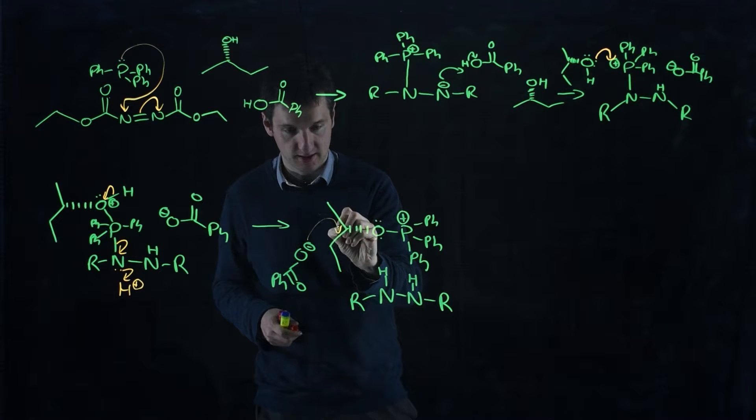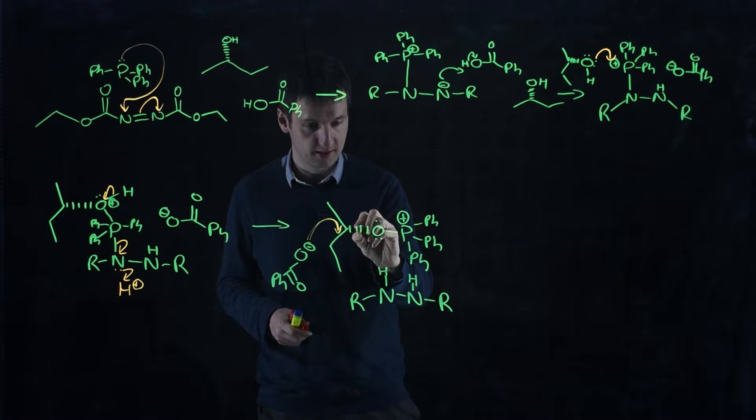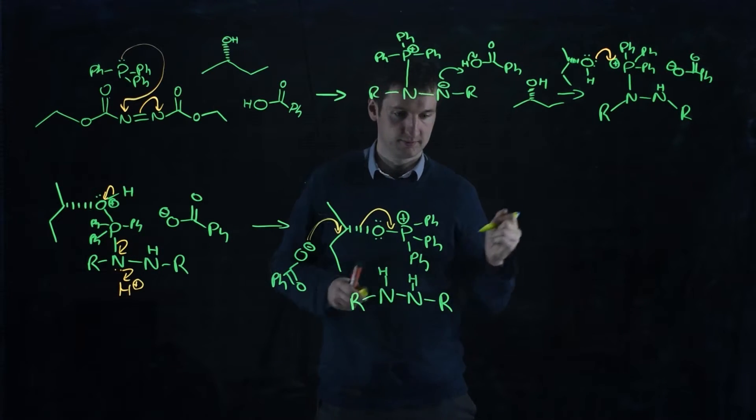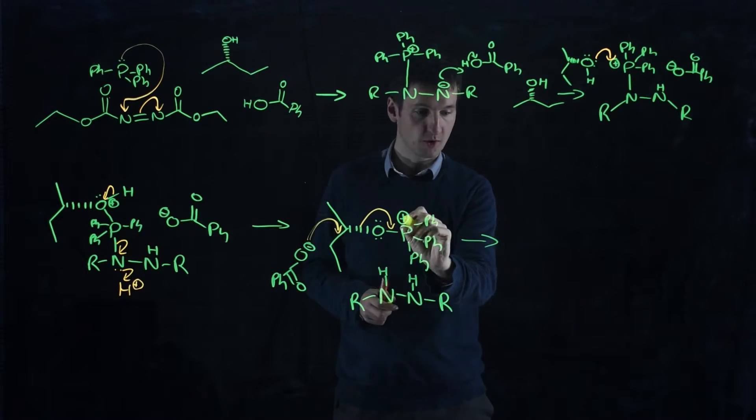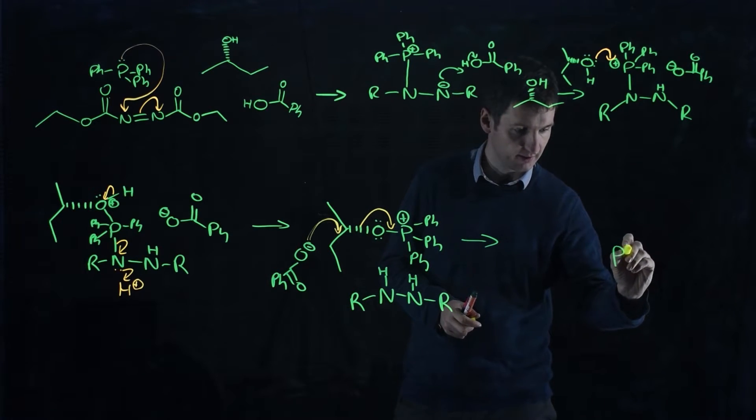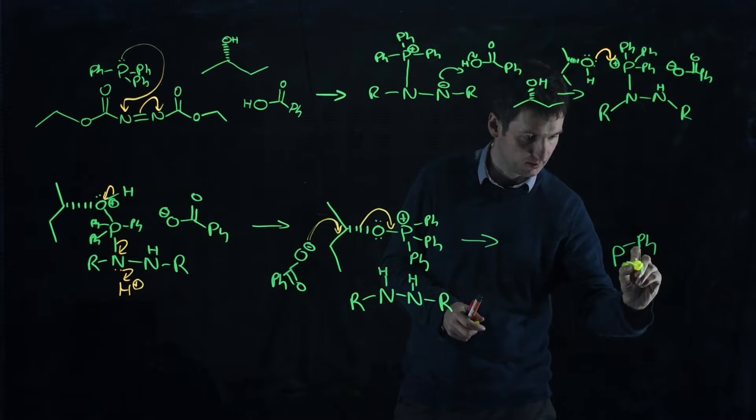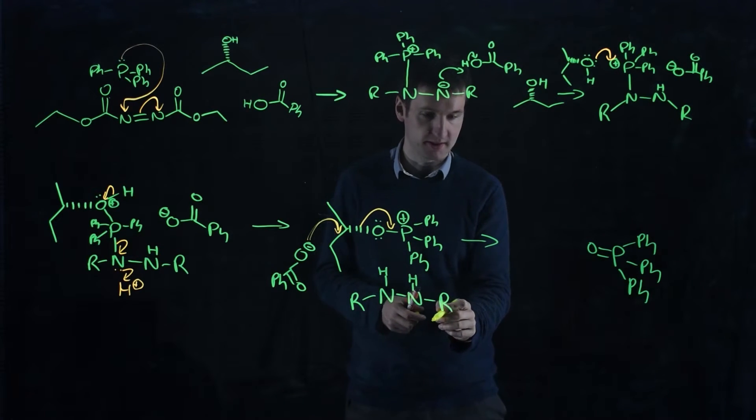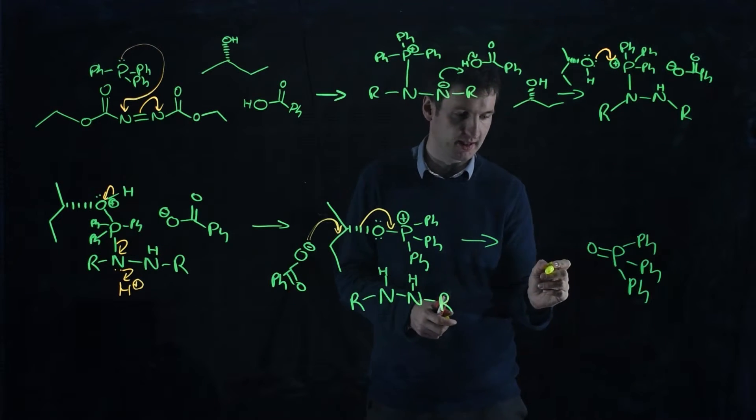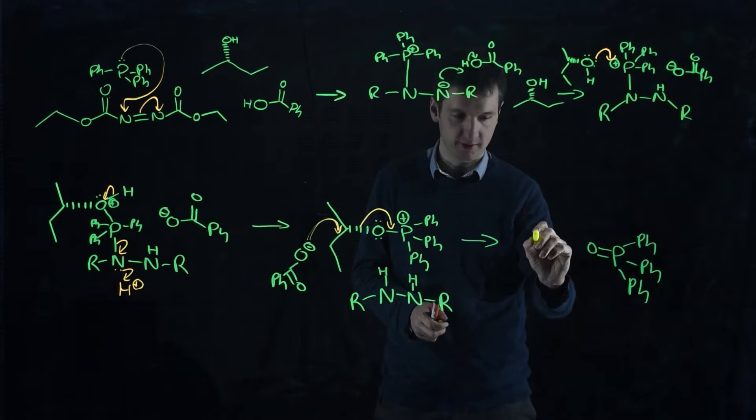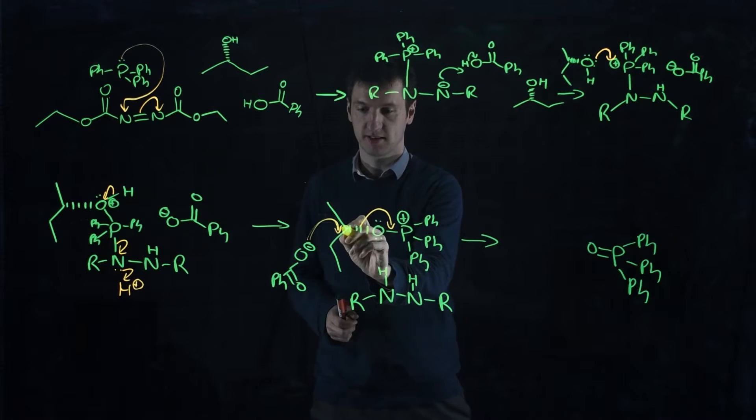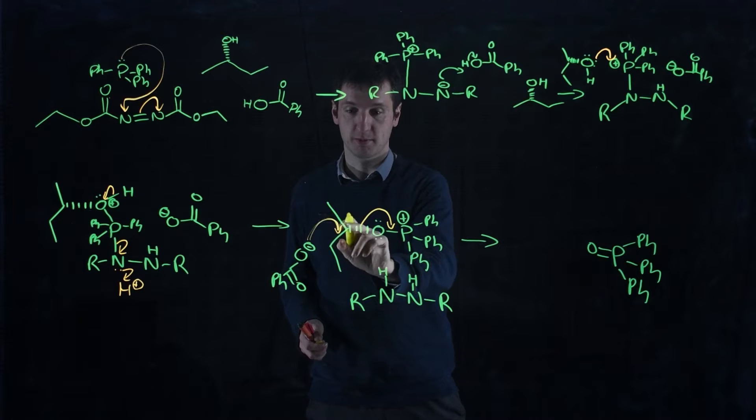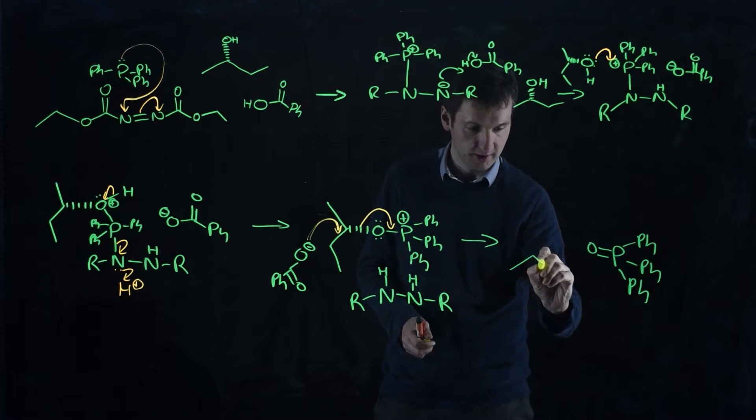It's going to attack SN2. This is going to leave as this attacks. What are we left with? Over here we have triphenylphosphine oxide. Our hydrazine we're going to ignore because it's not going to do anything else in this reaction. As for the rest of the molecule, well, this has attacked on this side and formed a new oxygen-carbon bond. Because it's an SN2 reaction, it's going to proceed with perfect inversion of stereochemistry.